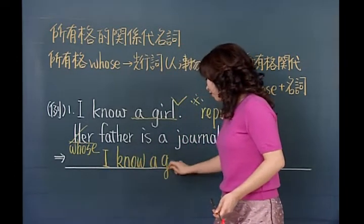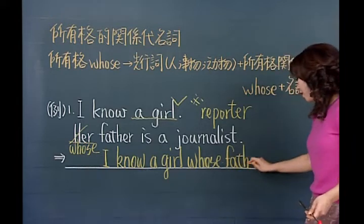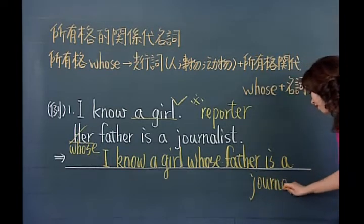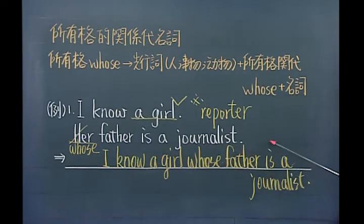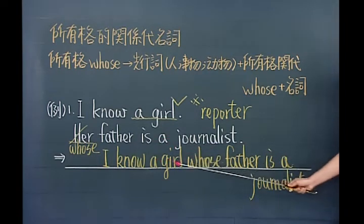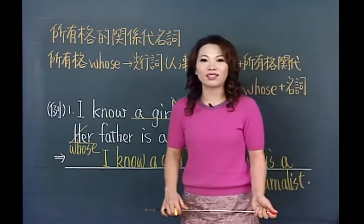I know a girl whose father is a journalist。中文翻译：我认识一位父亲是新闻记者的女孩。同样的，我可以换：我认识一位妈妈是英文老师的男孩——I know a boy whose mother is an English teacher。自己改掉其中几个字之后，这句话就变成属于你的英语了。